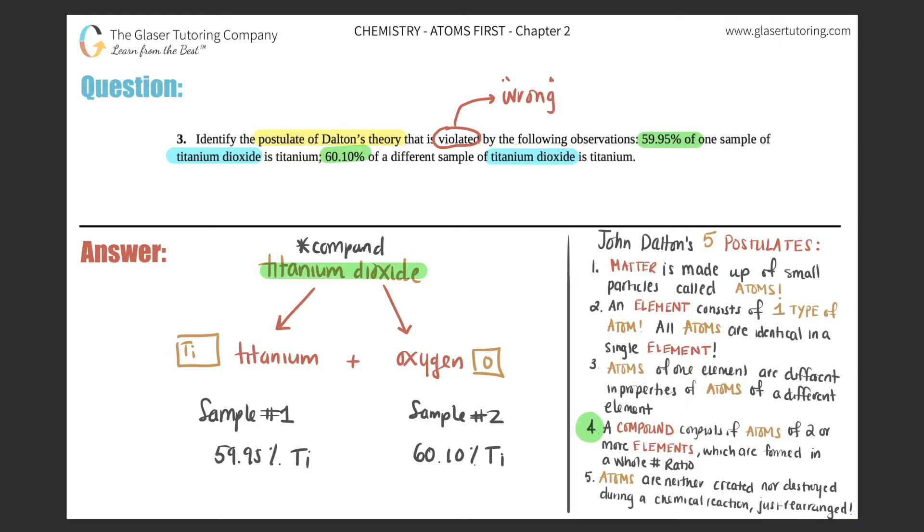But number four states that a compound consists of atoms of two or more elements, which are formed in a whole number ratio. Now we should know that if it's a compound, the whole number needs to be consistent. It will be the same ratio. If you have sample one of titanium dioxide and sample two of titanium dioxide, it's the same compound.